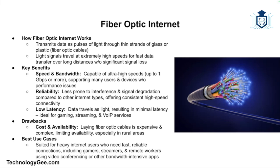First, let's discuss fiber optic internet, which is one of the fastest and most advanced internet service types available today. Fiber optic internet transmits data as pulses of light through thin strands of glass or plastic, called fiber optic cables. These light signals travel at extremely high speeds, allowing for fast data transfer over long distances without signal loss.